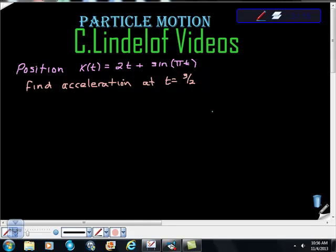C. Lindelof videos, AP Calculus Particle Motion. We have a position function given by x(t) = 2t + sin(πt). We're asked to find the acceleration at t = 3/2.